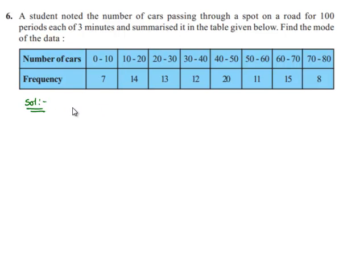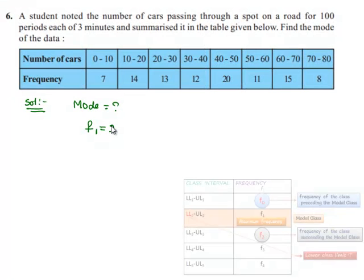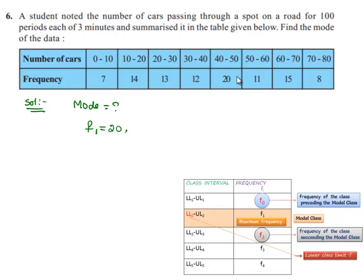They have asked us to find the mode of the data. Seeing here, the maximum frequency in the tabular form is 20. It is known as the frequency of the mode. Its corresponding modal class is 40 to 50.